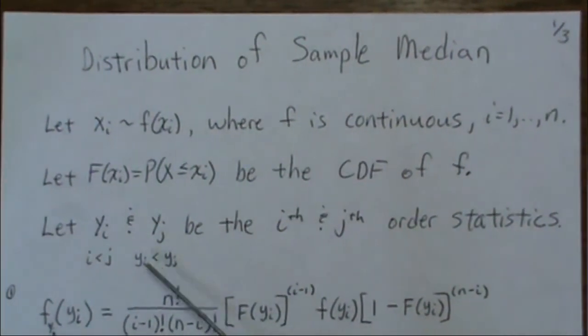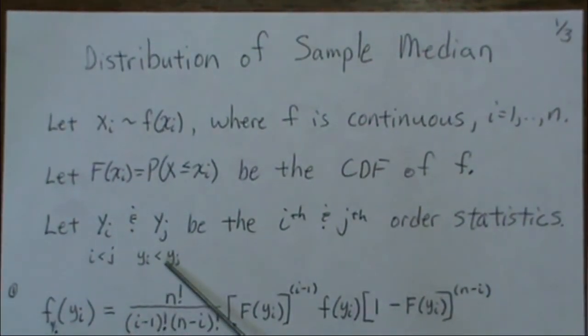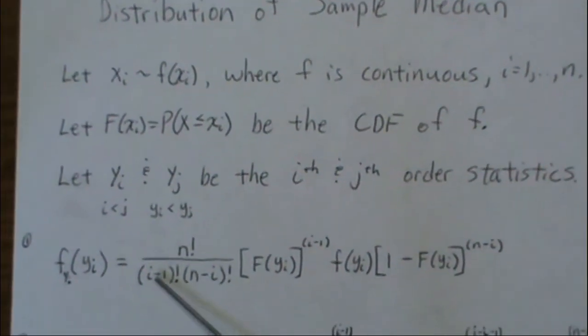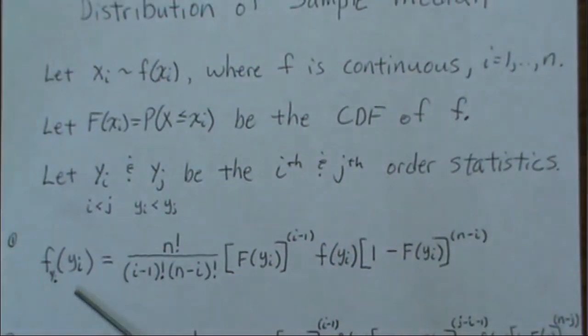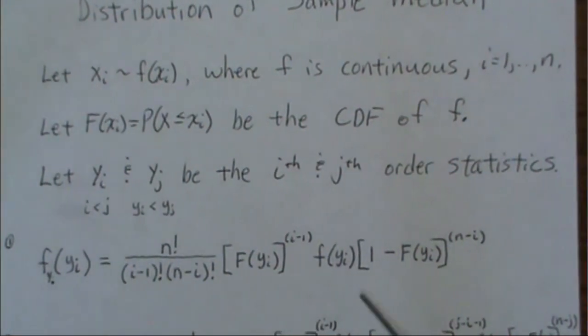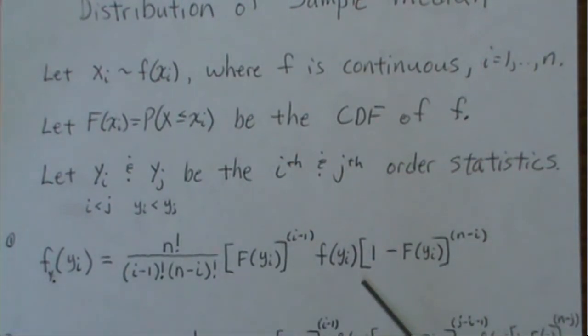The probability of them being equal is zero, and so it doesn't factor into the density. So here is the density for the ith order statistic, and we're not going to go over how to create that. I'll put that in another video to show how to create the densities for order statistics.